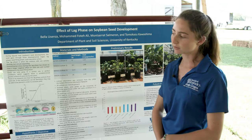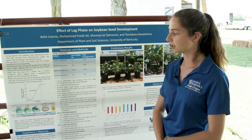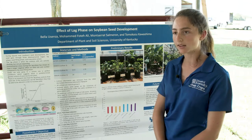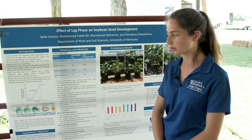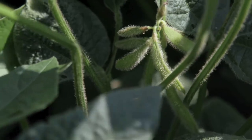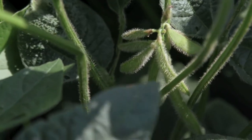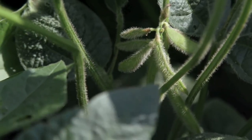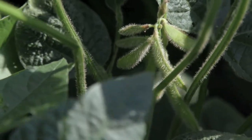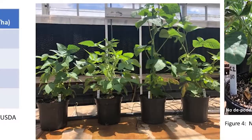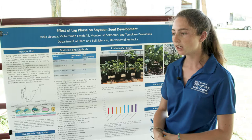The lag phase is when the pod of a soybean is actually growing but the seed itself is not growing. The endosperm and embryo are undergoing cellular divisions but they're not actually expanding. Past literature has shown that any environmental stresses during this lag phase have a negative effect on seed size and development.